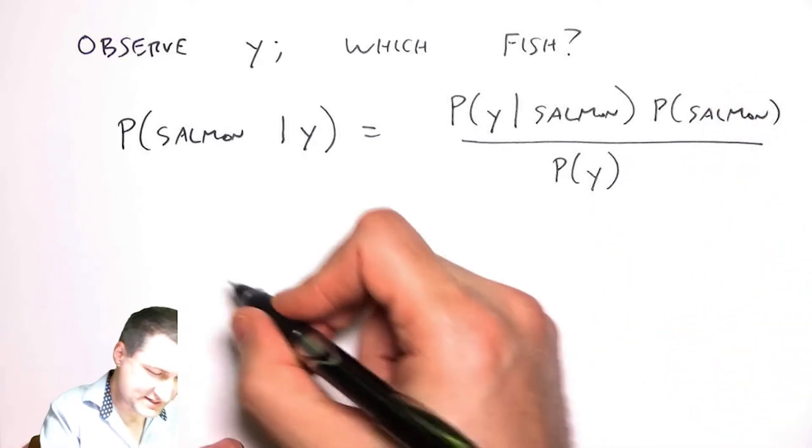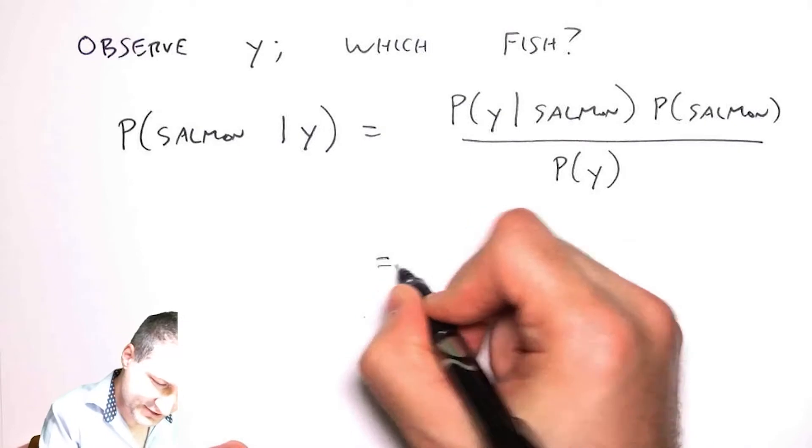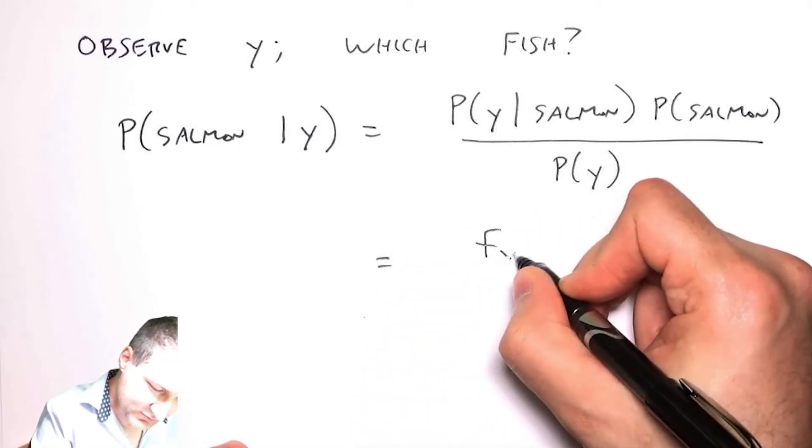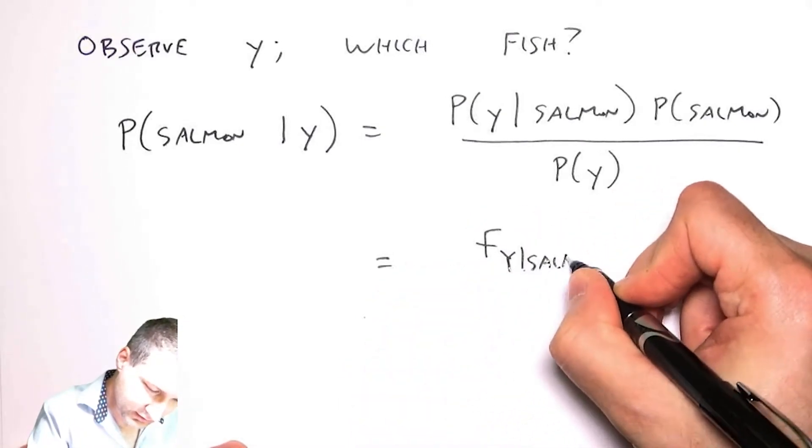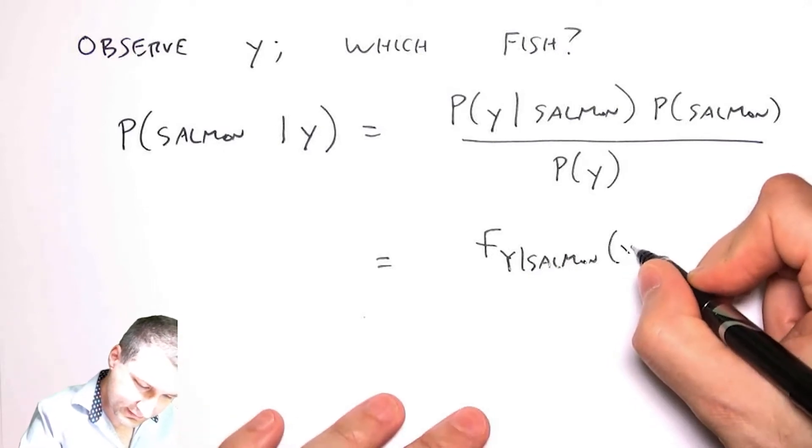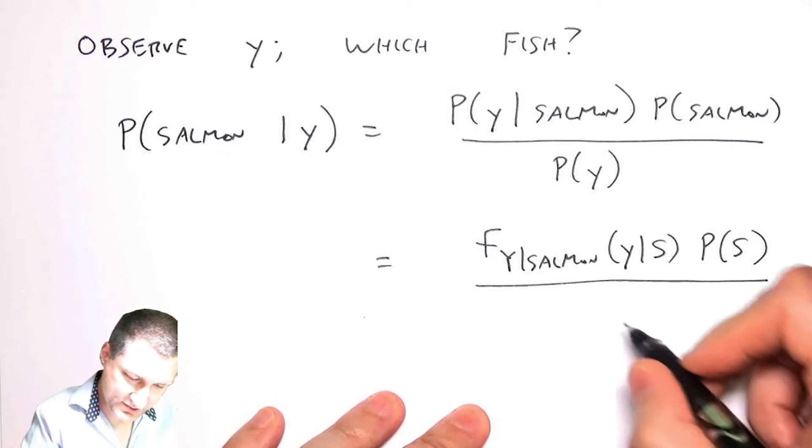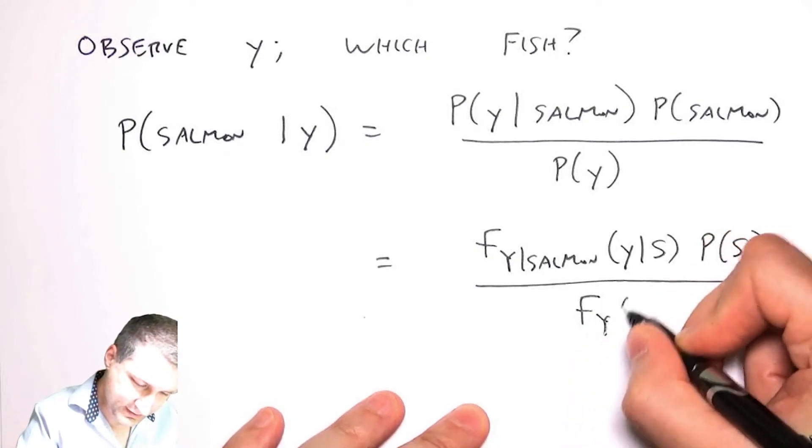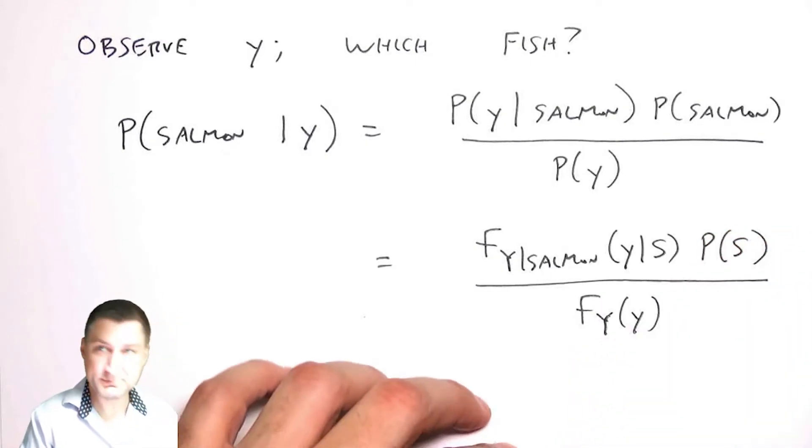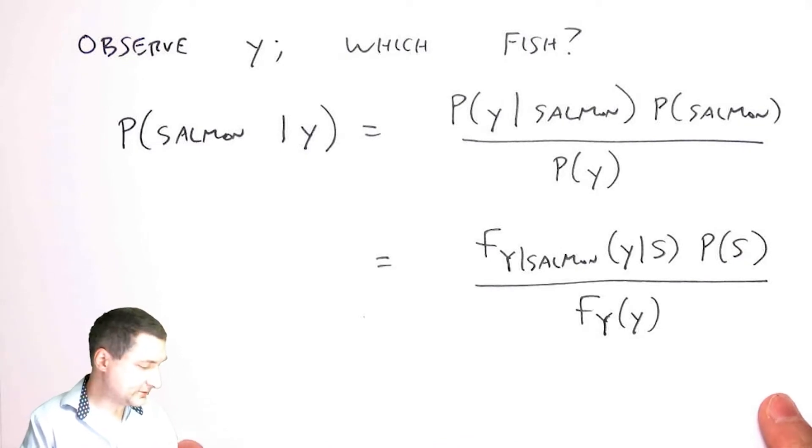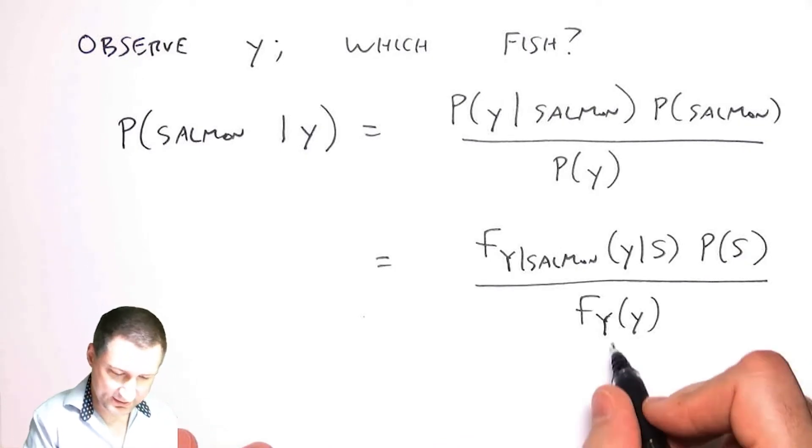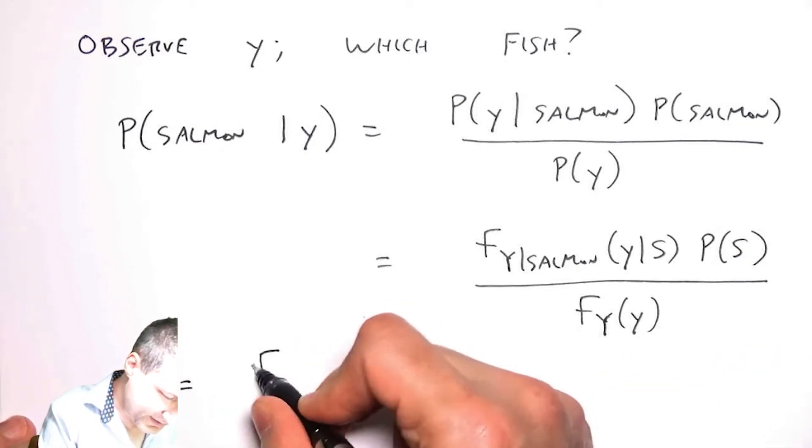If I'm being really precise about this, let me be clear: this would be like a conditional PDF in y, this would be the probability of salmon which is just a number, and this is like the marginal PDF in y.